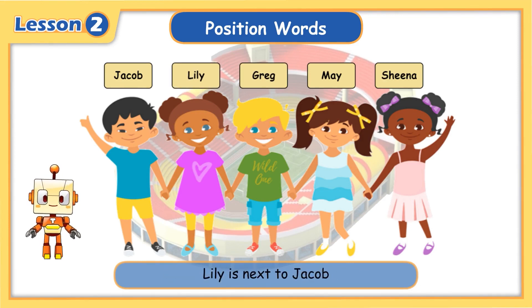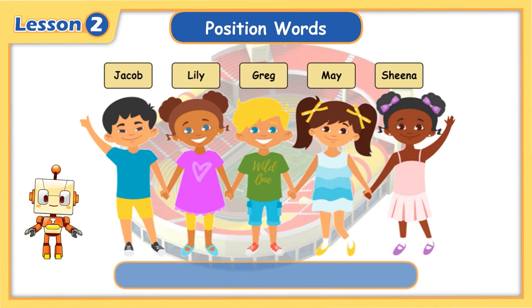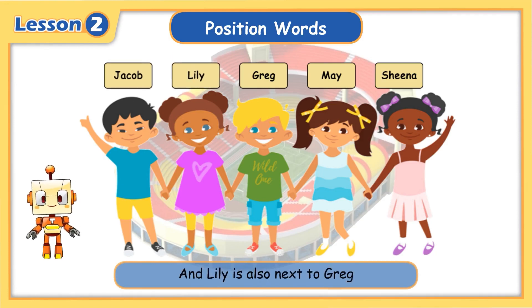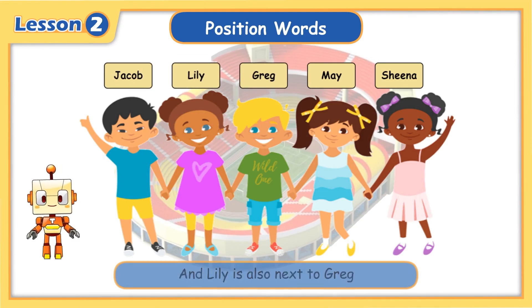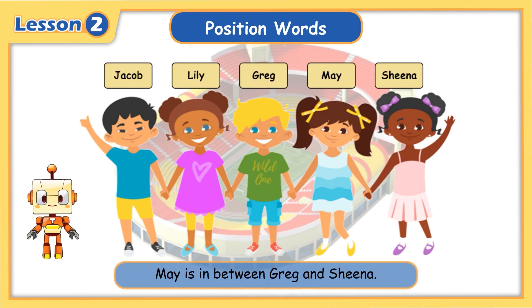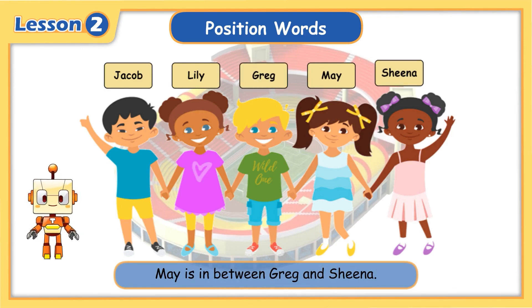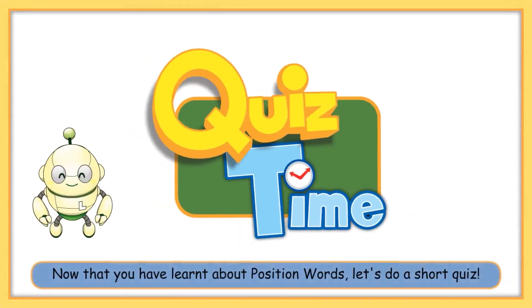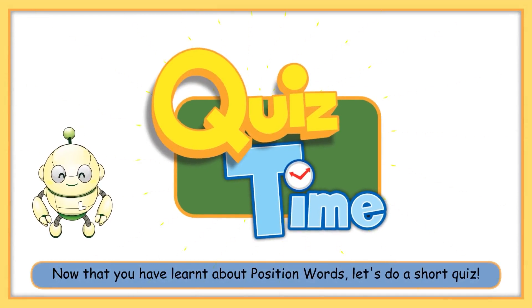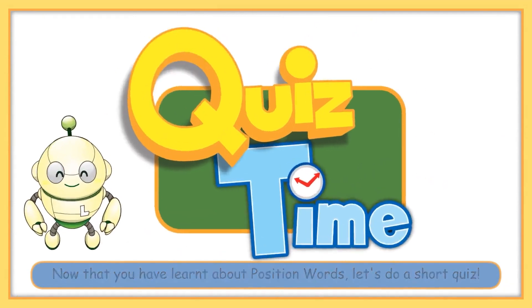Lily is next to Jacob, and Lily is also next to Greg. May is between Greg and Sheena. Now that you have learned about position words, let's do a short quiz!